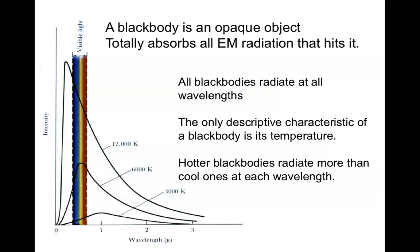You see intensity on the y-axis and wavelength in microns on the x-axis. And here we have three black body curves of different bodies with different temperatures. And shown also is the wavelength range of visible light from the blue at a little less than half a micron to the red at about two-thirds of a micron.